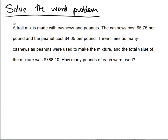A mixture word problem. A trail mix is made with cashews and peanuts. The cashews cost $5.75 per pound and the peanuts cost $4.05 per pound.